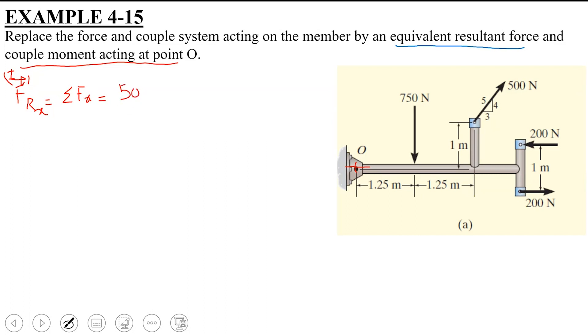3 by 5 into 500. So, 500 into 3 over 5 and since it would be acting towards the positive x axis, we will represent it with positive sign. So FRx would be equal to 300 N. And the positive sign means that the x component of the resultant is towards the right axis.